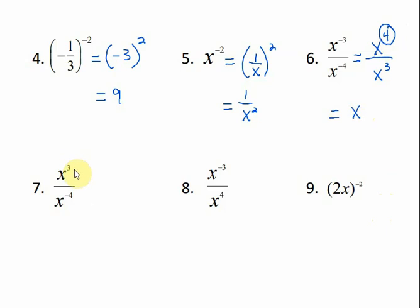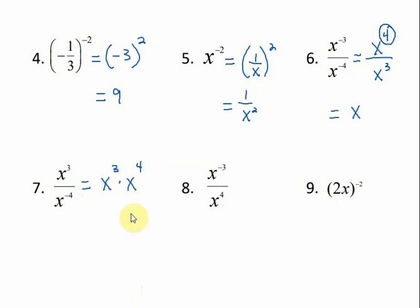In number 7, if an exponent is not negative I leave it where it is. So x to the 3rd is positive, I'm leaving it where it is. But x to the negative 4 is in the bottom, so I bring it to the top — that changes the operation from division to multiplication. The product rule says when multiplying like bases, add the exponents. So this gives me x to the 7th.